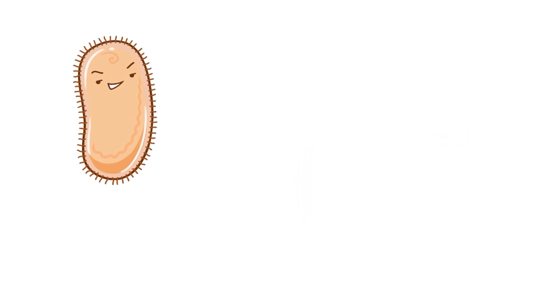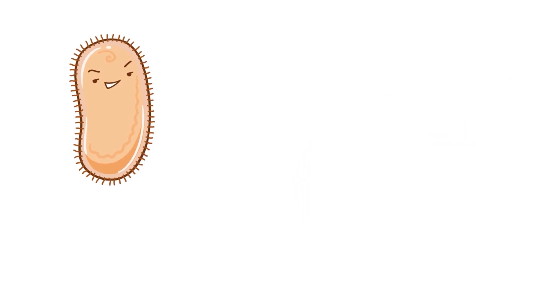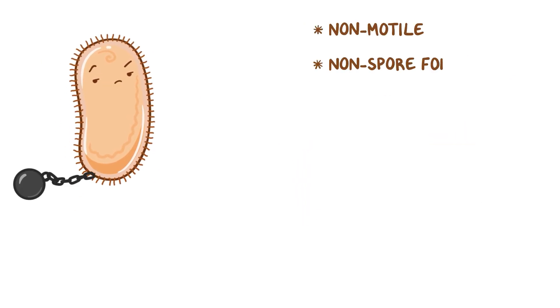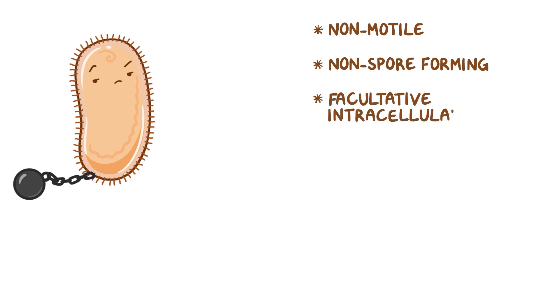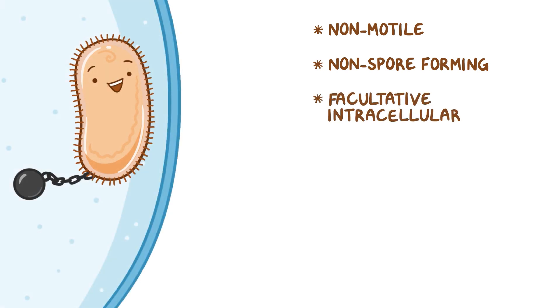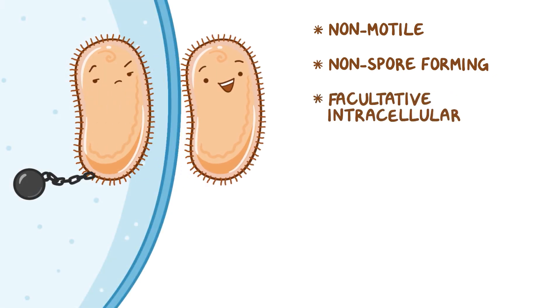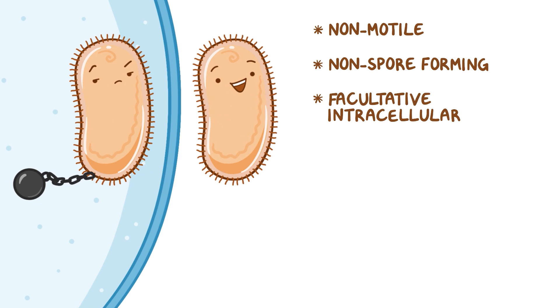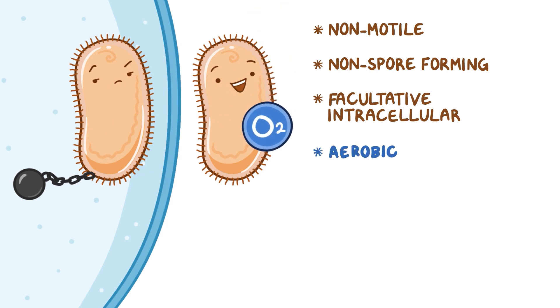Francisella tularensis is non-motile, non-spore-forming, facultative intracellular — which means it can survive both outside and inside the cell — and aerobic, which means it can survive only in the presence of oxygen.